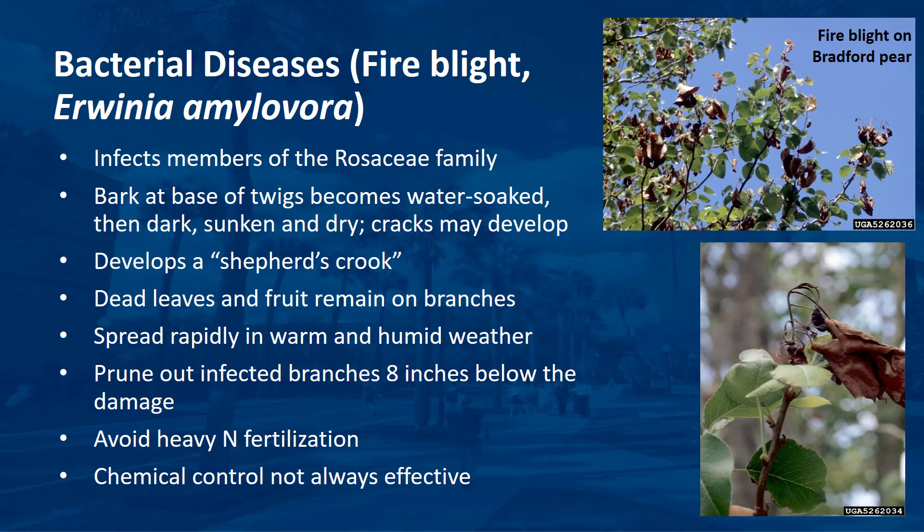Prune out infected branches 8 inches below the damage. Avoid heavy nitrogen fertilization, especially in summer, when succulent growth is most susceptible to fire blight infection. Chemical control is not always effective and needs to be applied preventively.